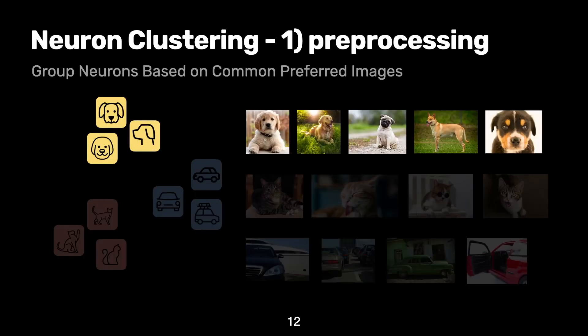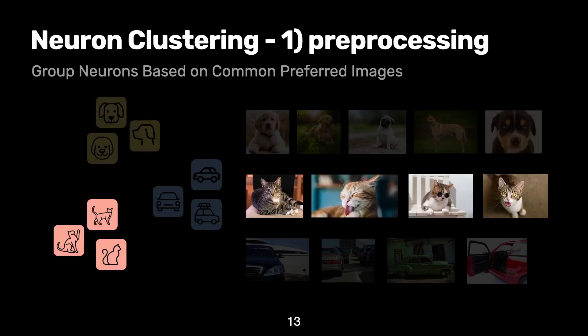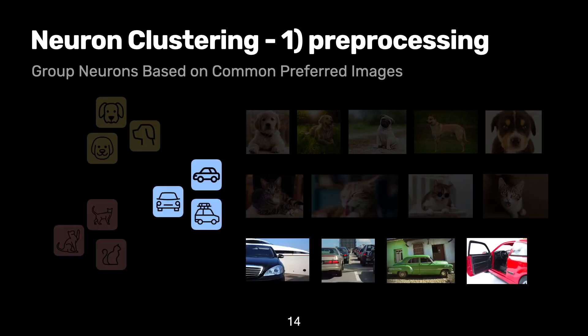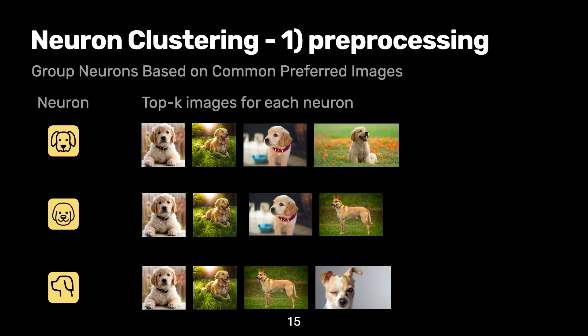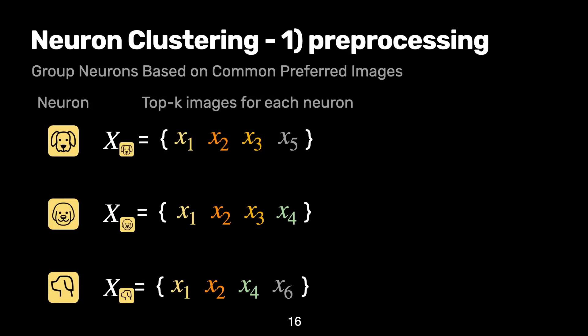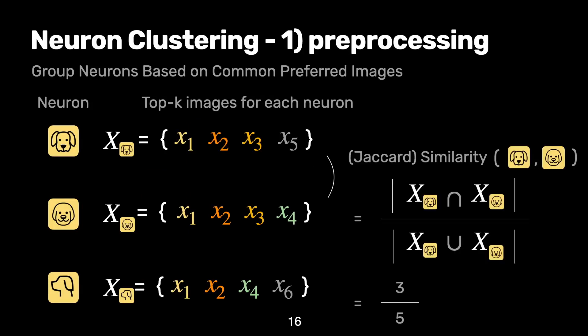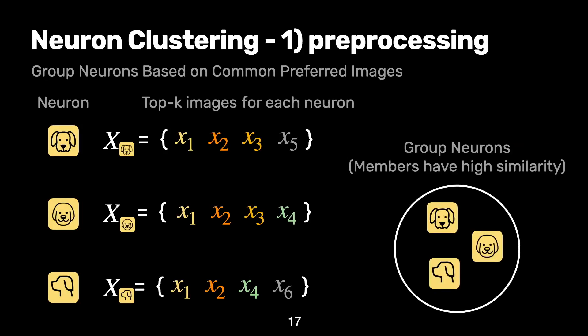The pre-processing stage aims to efficiently and quickly cluster neurons before comparing neuron activation maps in detail. Our main idea is to group neurons if they are highly activated by many common images. For each neuron, we find a set of k-images that highly activate the neuron. Then, we compute similarity between neurons by the similarity between the top image sets. Specifically, we measure Jaccard similarity between the sets, and we hash neurons into the same bucket if they have high Jaccard similarity.